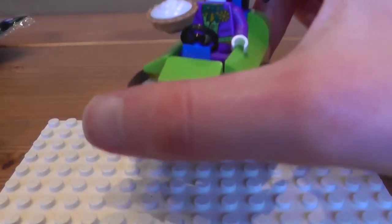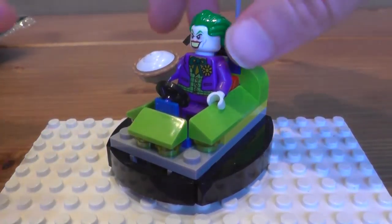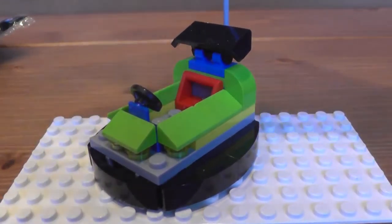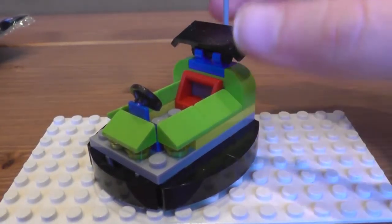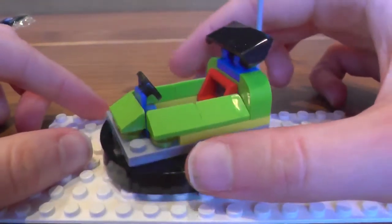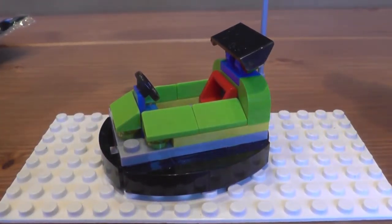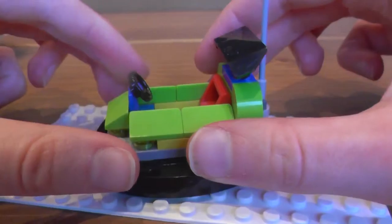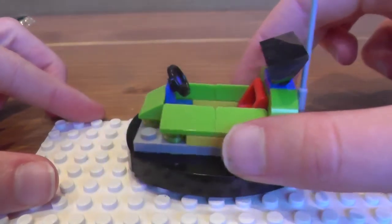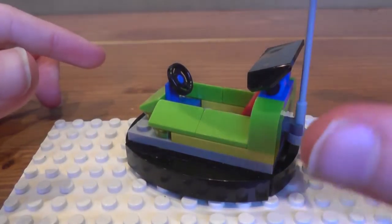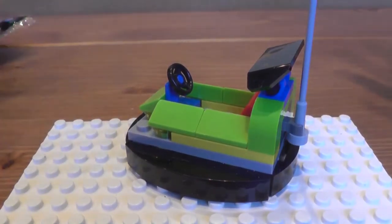First we will be looking at Joker's Bumper Cart on its own, and then we will look at the actual figure. This is a nice, small, easy little build of obviously a Bumper Cart with, of course, the Joker's colour of lime green.